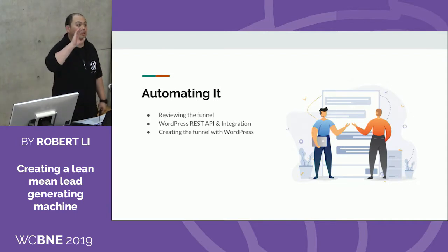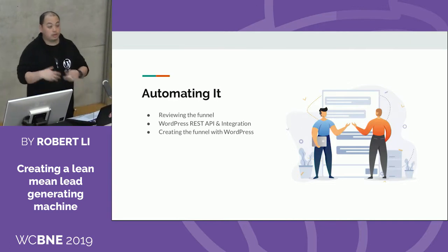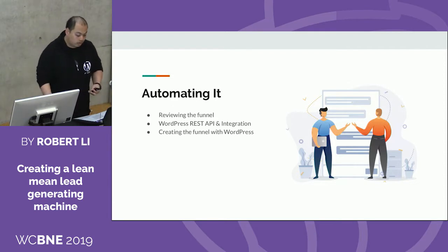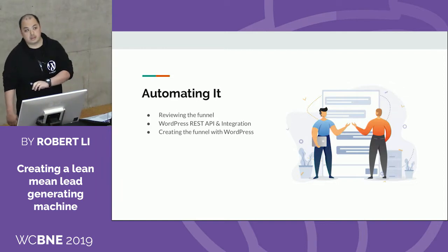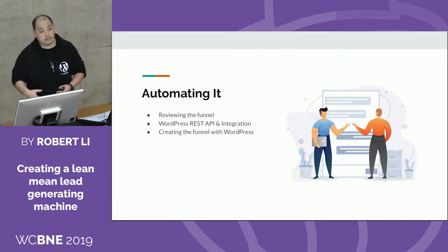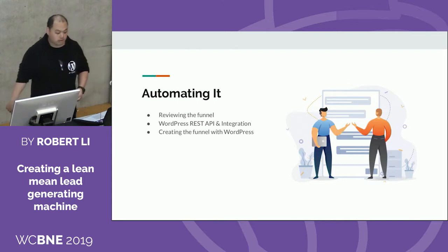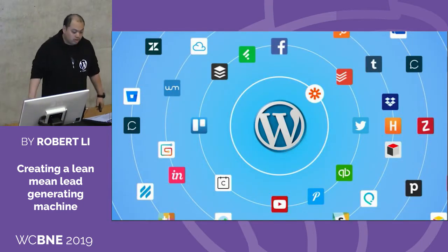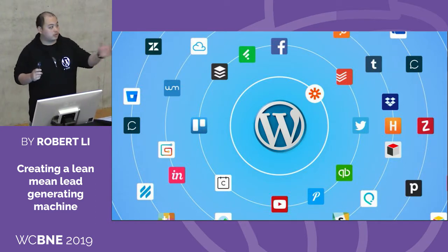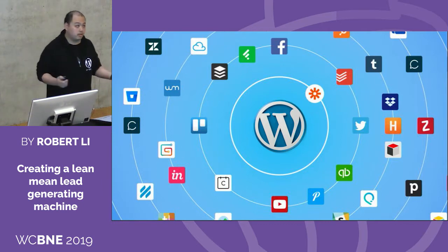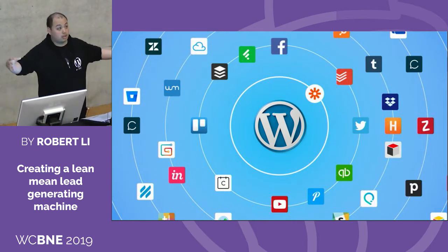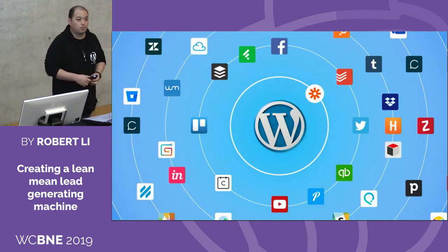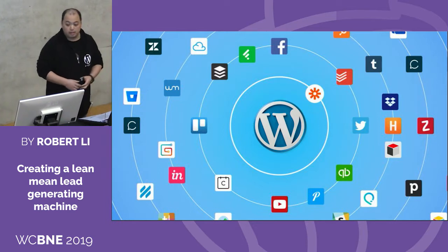Let's talk about automating it. We've talked about how to generate awareness, build that interest, and nurture that lead. As you start to get busy and grow, it gets really hard to do all of those steps in a scalable way, especially if you're doing them by hand. Some of the ways you can win this process is by using WordPress, because WordPress is so powerful with its native REST API. It allows you to use so many different tools to automate a lot of that process. As Michael said, there are over 50,000 plugins you can leverage for WordPress. A couple of simple tools I like to use are Zapier and IFTTT — If This Then That. They're not enterprise-grade, but they're super easy to get going.